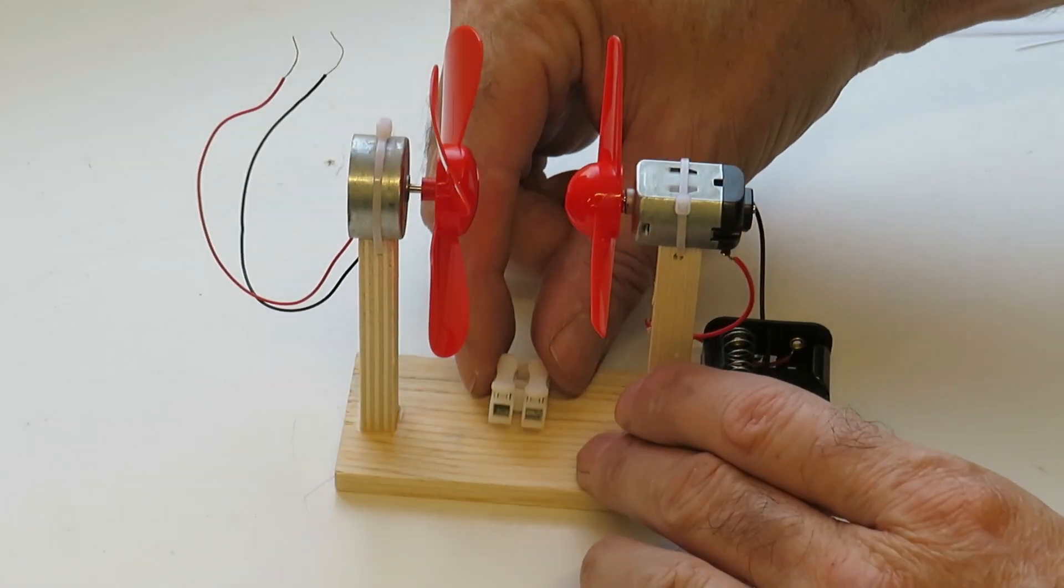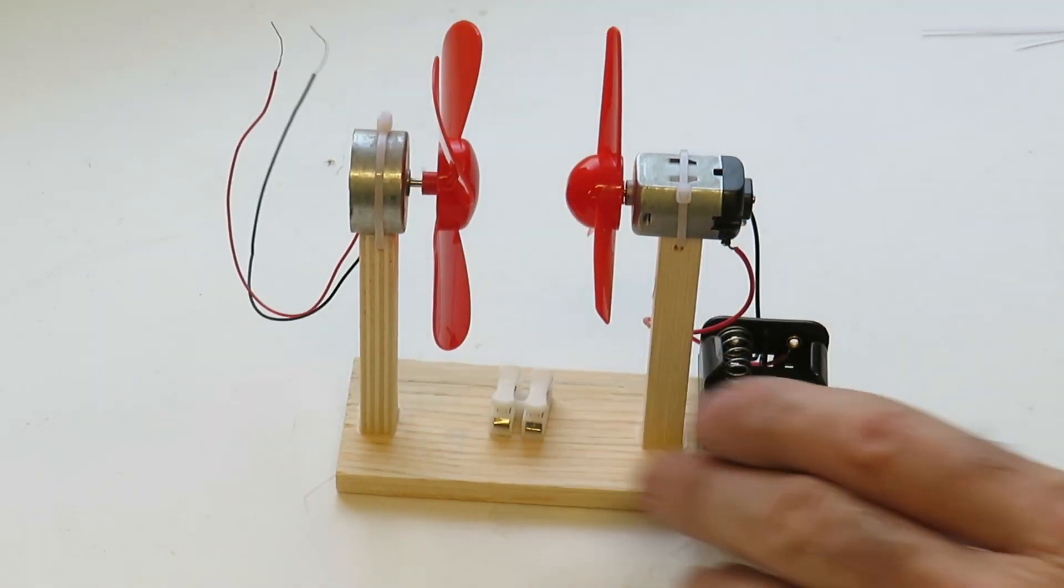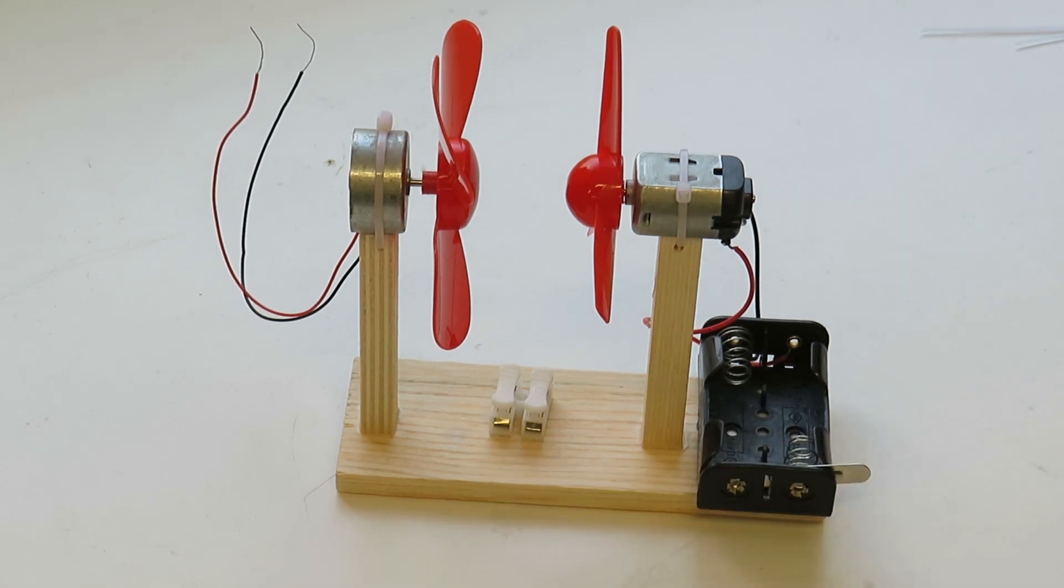And next I'm just going to stick this connector to the base. I'm going to connect the cables from the generator motor and then finally I'll put an LED in there and put some power to it and we'll see what happens.